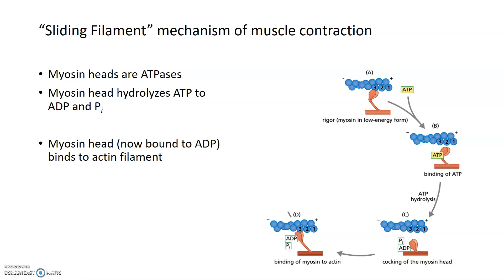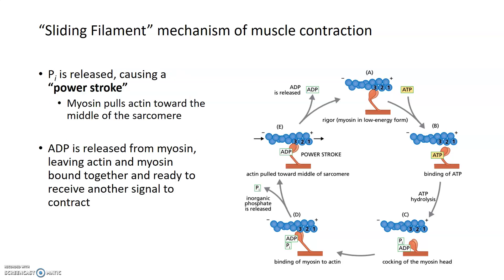The thing that actually pulls the actin filament forward is called the power stroke. The power stroke is mainly triggered by the release of inorganic phosphate. Once that inorganic phosphate dissociates from ADP, the power stroke can happen, and this myosin head will pull actin towards the center of the sarcomere. Then ADP is released from the myosin head, and actin and myosin remain bound together, ready for the next ATP molecule to come in and signal another round of contraction.